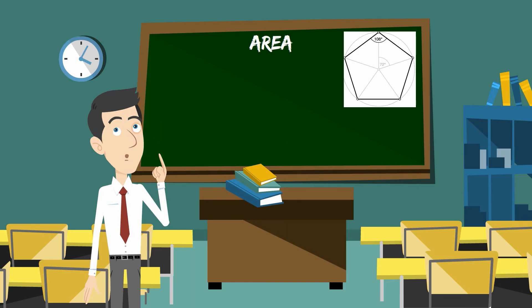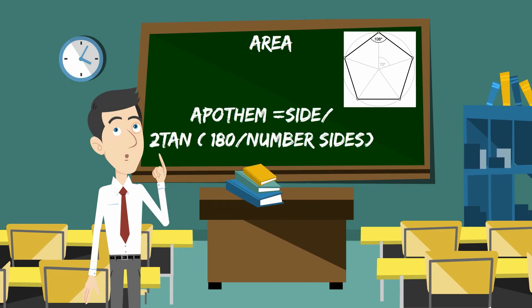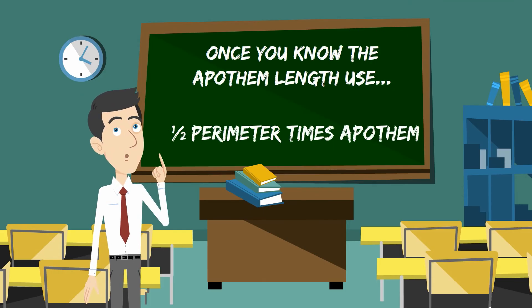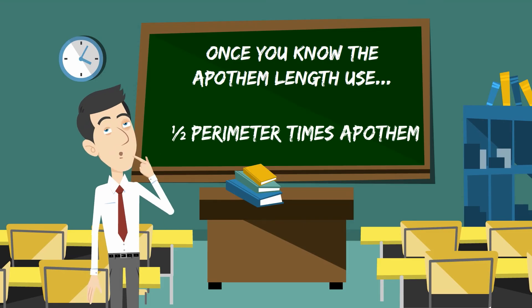Then you can find the length by using side divided by 2 times tangent times in parenthesis 180 divided by the number of sides. Once you know the apothem then just use 1 half perimeter times the apothem.